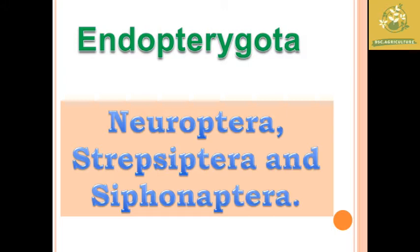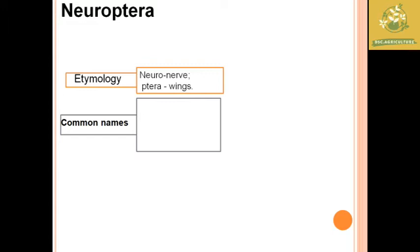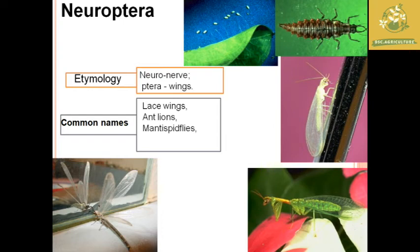Let's start with Neuroptera. Neuroptera is known as net-winged insects. Common names include lacewings, antlion grubs, mantispid flies, and owlflies.